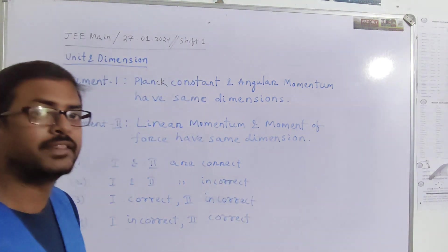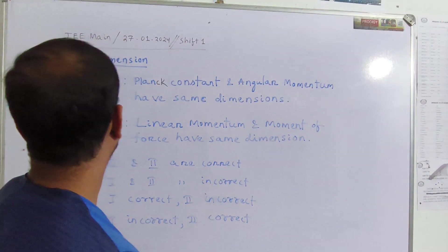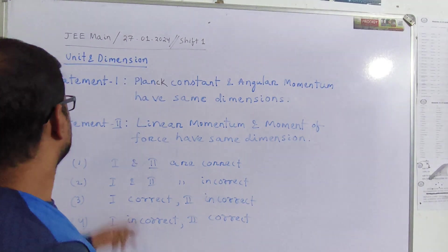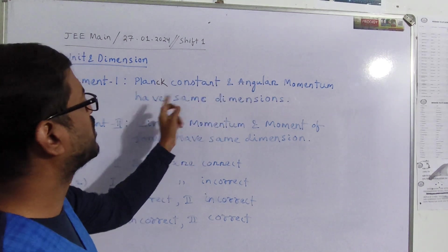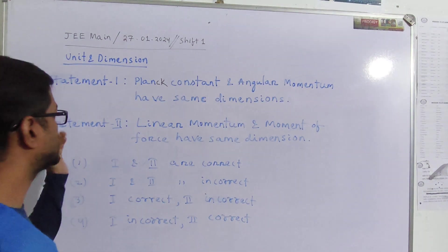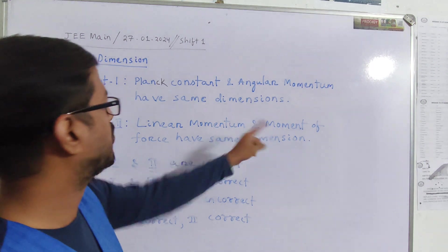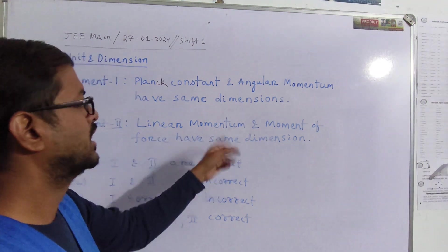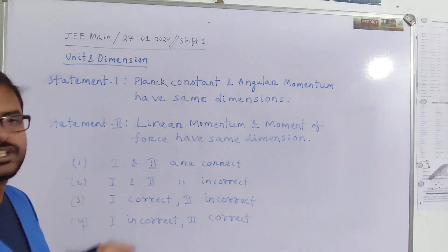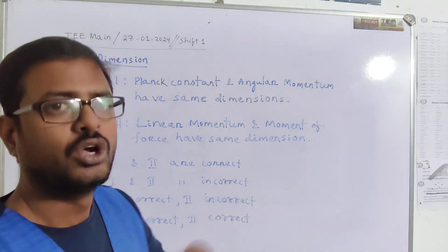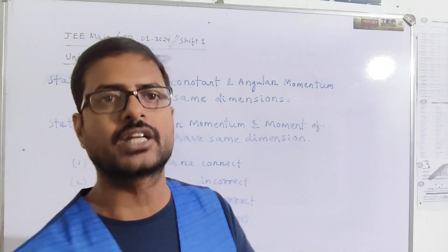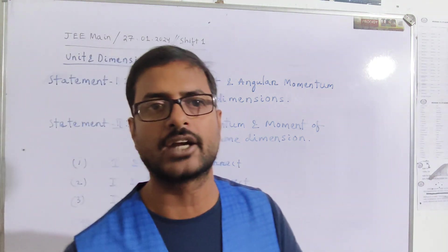This is a very simple question I think you people can do good. So let us discuss this. Statement one: Planck constant and angular momentum have same dimensions. Statement two: Linear momentum and moment of force have same dimensions. Then we will check whether both statements are correct, one is correct, two is incorrect, one is incorrect, two is correct, or both the statements are incorrect.